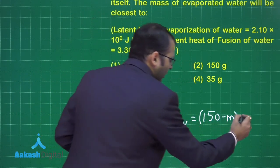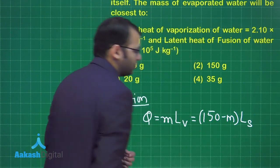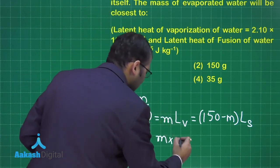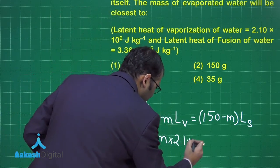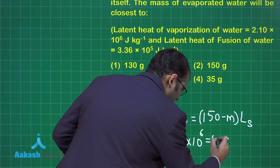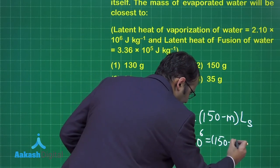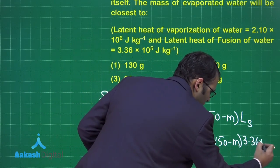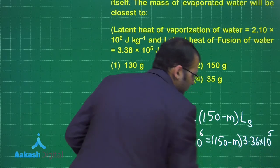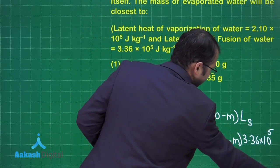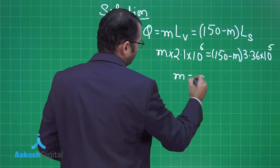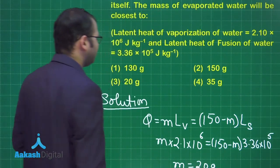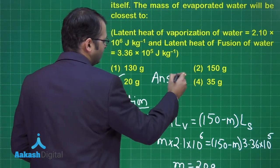gram, M mass has been lost and rest has suffered the fusion. So from here you will get M into the latent heat of vaporization that is given as 2.1 into 10 to power 6 joule per kg equal to 150 minus M, as some amount has been lost from vaporization, and this would be 3.36 into 10 to power 5. Now on solving this you will get M equals to 20 grams. Let's see which is the best suited option. Option number 3 would be the right answer.